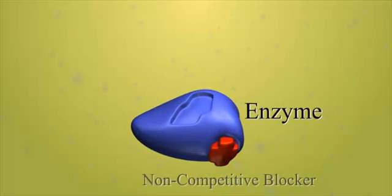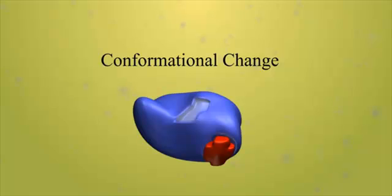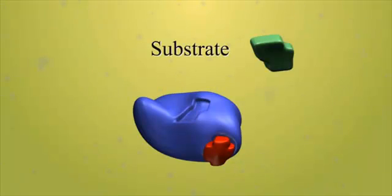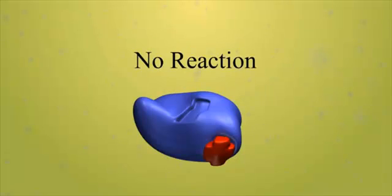A non-competitive inhibitor molecule binds to the enzyme in a region away from the active site. This attachment distorts the tertiary structure of the enzyme molecule, leading to a change in the shape of the active site. This means that the substrate molecule can no longer fit into it.